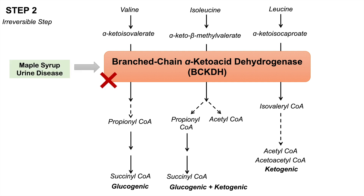In maple syrup urine disease, the enzyme BCKDH is dysfunctional, so we cannot process the alpha-keto acids or the branched-chain amino acids any further. This results in an increase in concentration of valine, isoleucine, and leucine, along with the keto acids themselves.